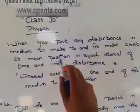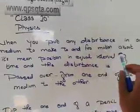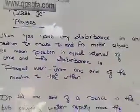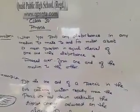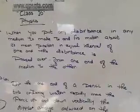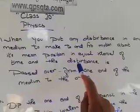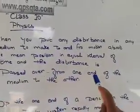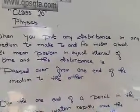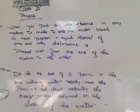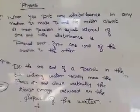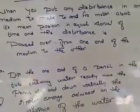Jab aap kisi bhi medium mein koi bhi disturbance put karte ho to make to and fro motion about its mean position. Jab uski mean position ko aap change karte ho, disturbance put karte ho aage pichhe karke in equal interval of time, and this disturbance is passed over from one end of a medium to the other. Ek equal interval of time mein jab aap koi disturbance put karte ho kisi medium mein, uski jaga ko usko change karte ho.